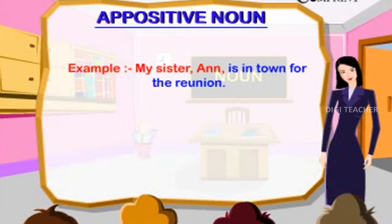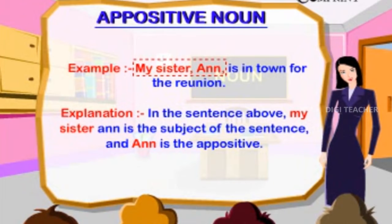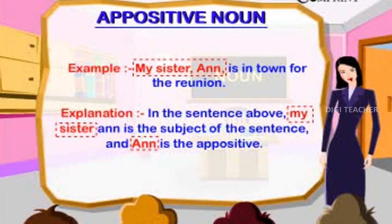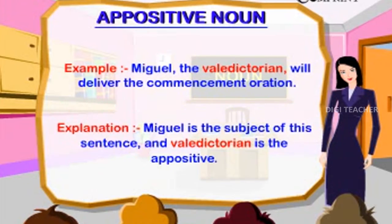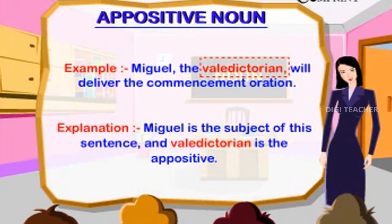Appositive Noun. Example: My sister Ann is in town for the reunion. In this sentence, 'my sister Ann' is the subject and 'Ann' is the appositive. Example: Magal, the valedictorian, will deliver the commencement oration. Magal is the subject and 'valedictorian' is the appositive.